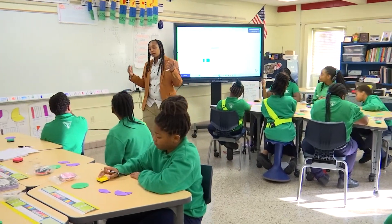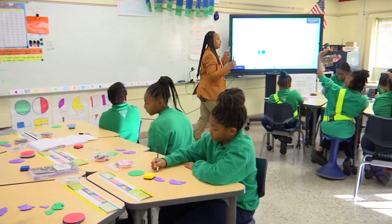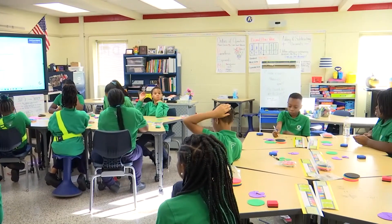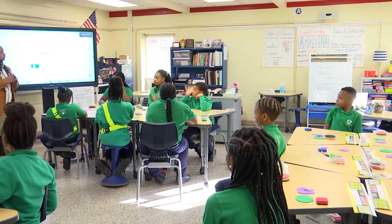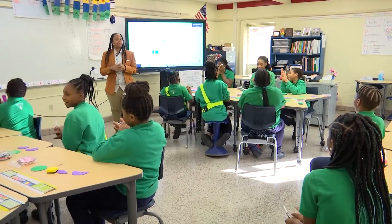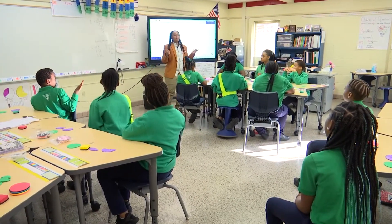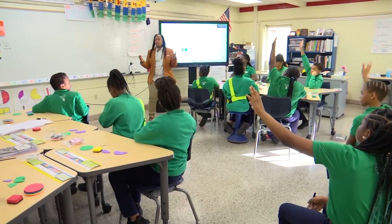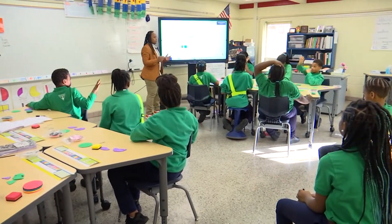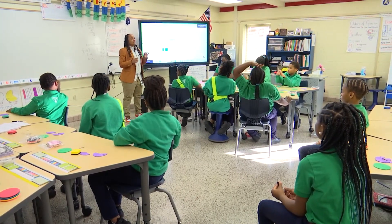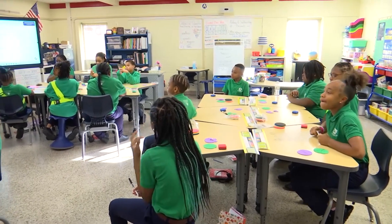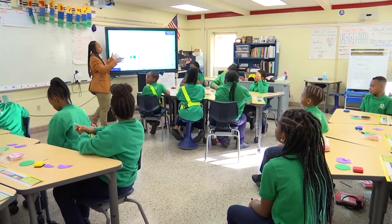Now there are two ways we could do this. Raise your hand if you could tell me one way we can change this to a decimal. Amari says we could double and half. Is she right? Yes. Good answer. We can double and half it, or we can do the division process. What does doubling and halving mean, though? Mariah says it means to multiply and divide by two. So when we double it, we're multiplying by two, and when we're halving, that means we're dividing by two.